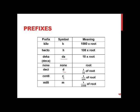Centi (symbol C) is a hundredth of the root word, so a centiliter is a hundredth of a liter. Milli (symbol M) is one thousandth of the root.